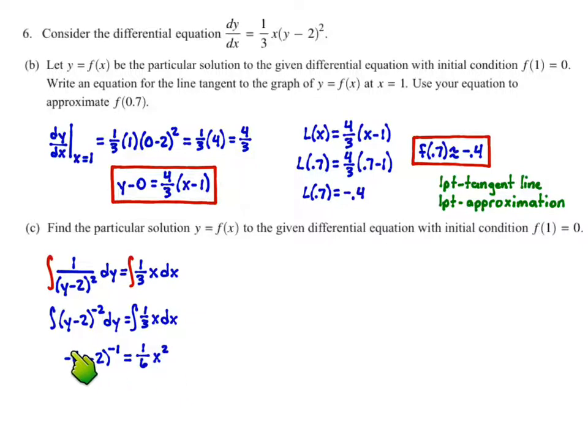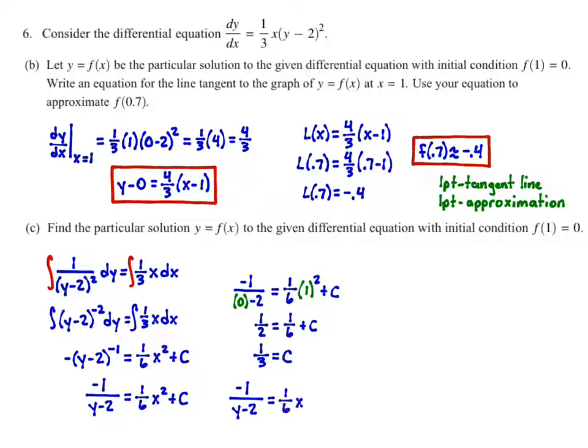We've got to put the plus C. And then we're going to plug in our initial condition here. So we're going to plug in 0 for y. And we're going to plug in 1 for x. I just rewrote this as a positive exponent by moving that down. But now plugging in the initial condition. And then solving for C. So we get 1/2 = 1/6 + C. Get a common denominator there. So that would be 3/6. And then subtract the 1/6. You get 2/6. So that turns into 1/3. So C is 1/3.